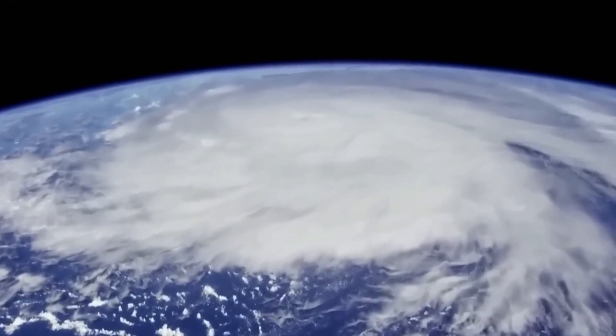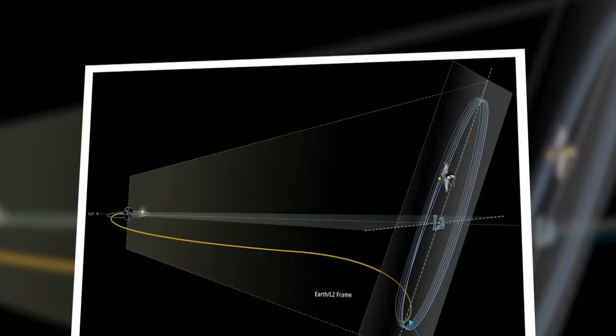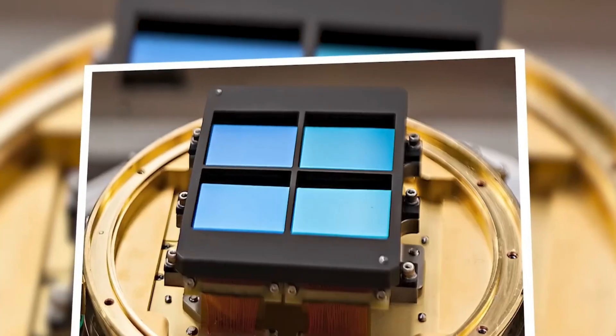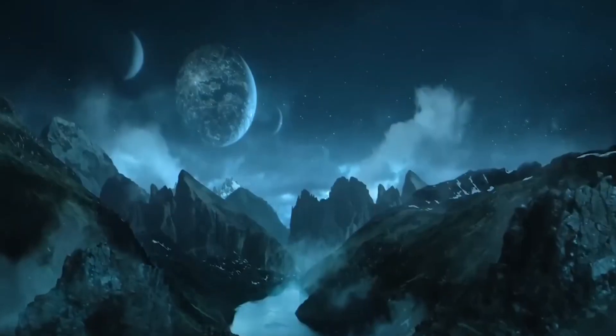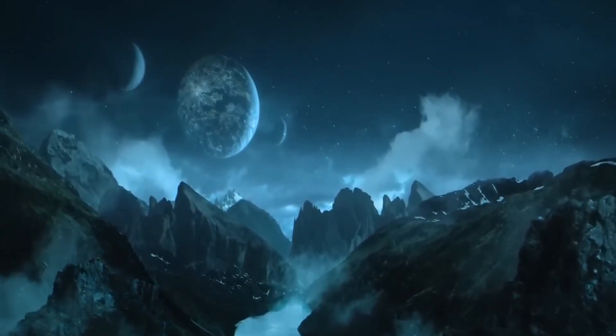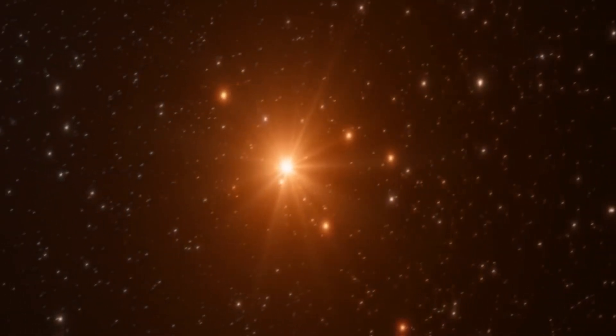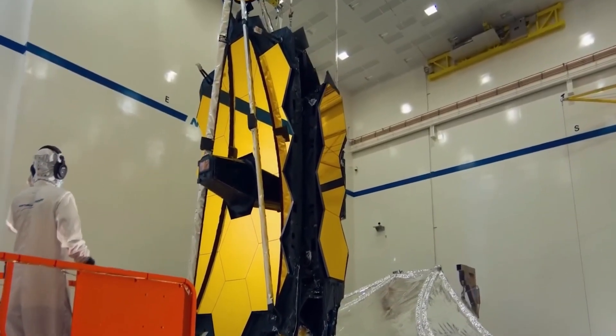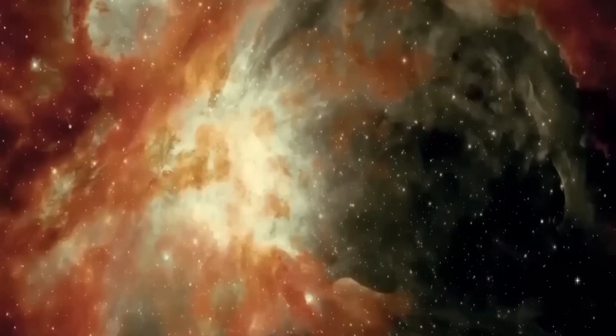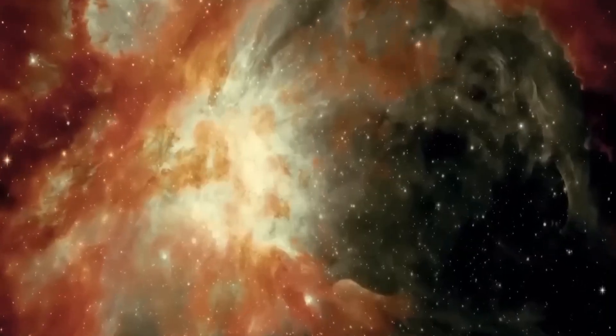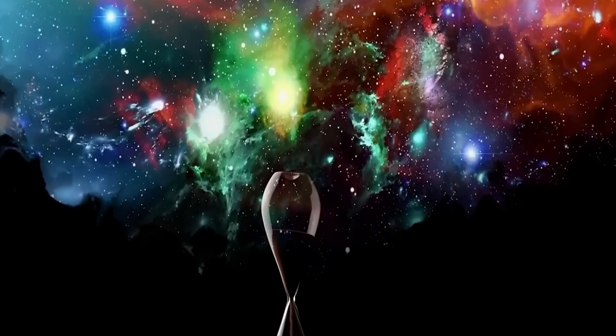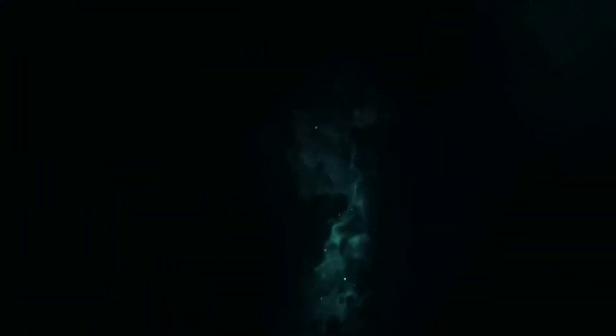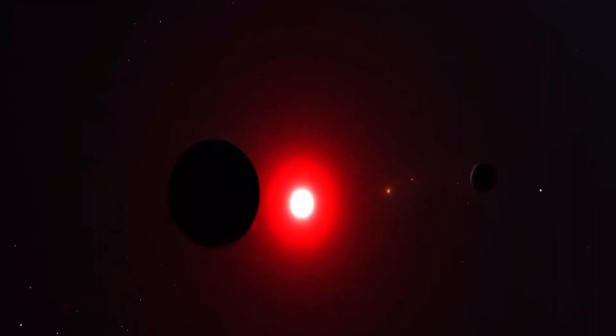One critical aspect of the JWST is its ability to observe things with great detail and sensitivity. It can study objects that are too old, distant, or faint for the Hubble Space Telescope. By capturing faint signals from celestial objects, the JWST can delve into the early stages of the universe, investigate how galaxies form, analyze the atmospheres of planets outside our solar system, and aid in comprehending dark matter and dark energy, which remain enigmatic to us.